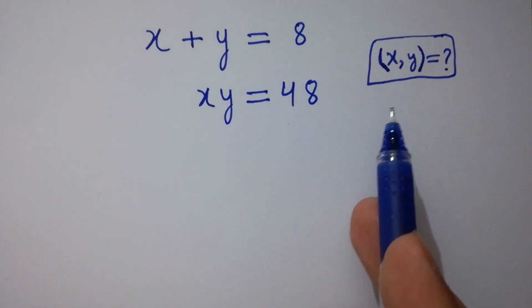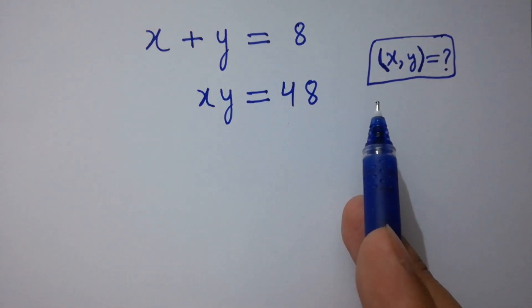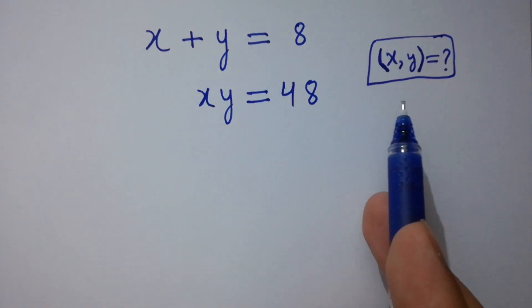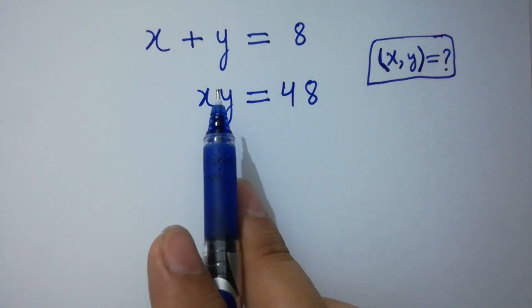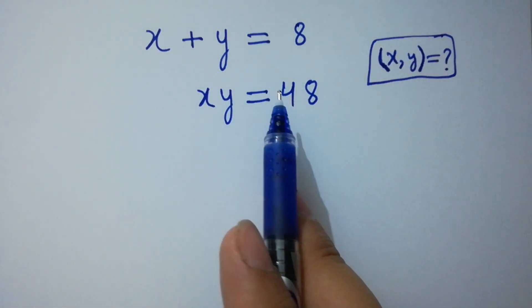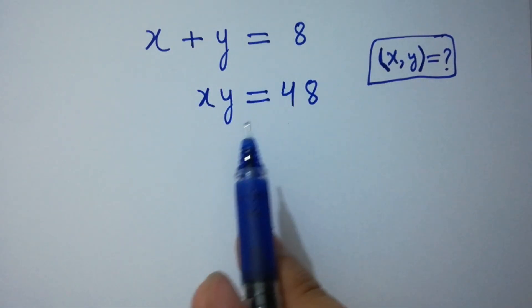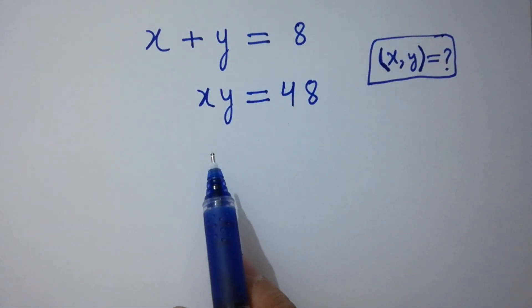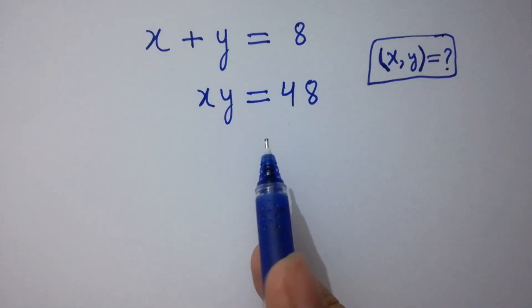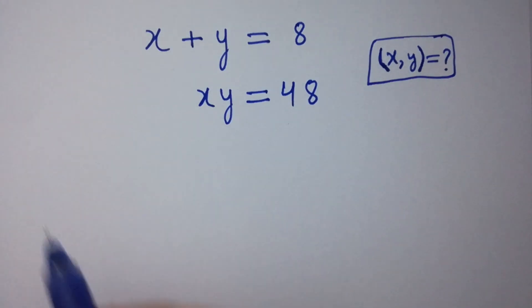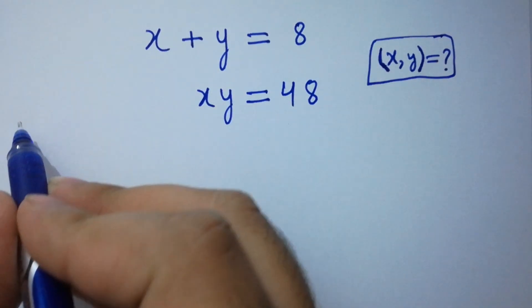Hello friends. Find the value of x and y if x plus y equals 8 and x times y equals 48. Let's have a solution.